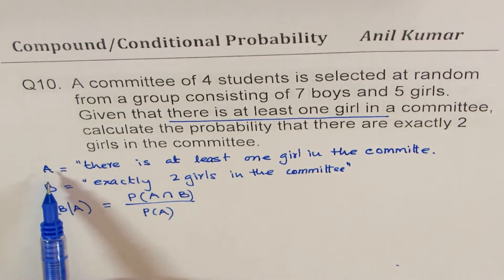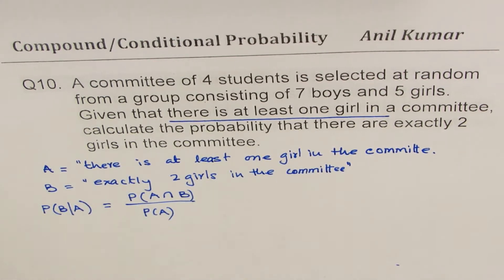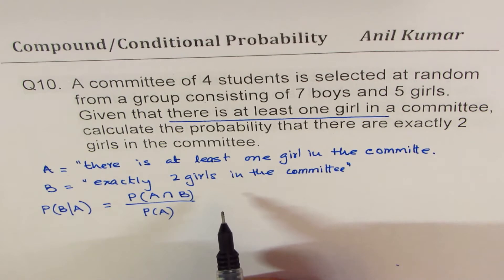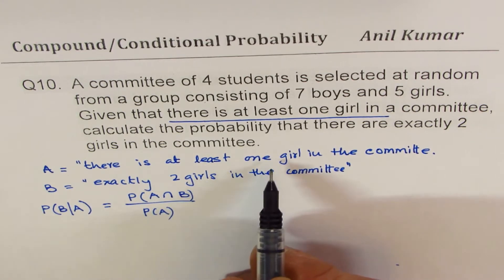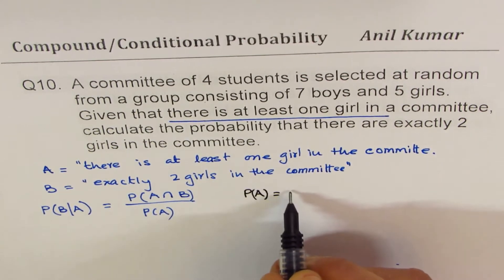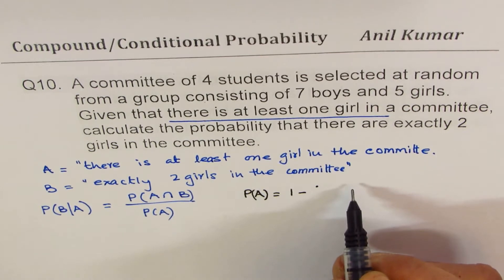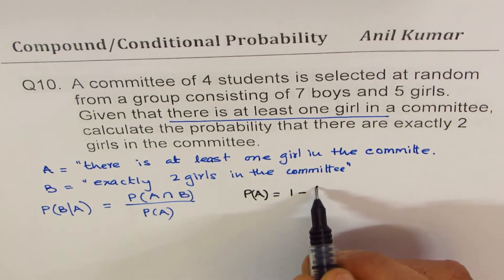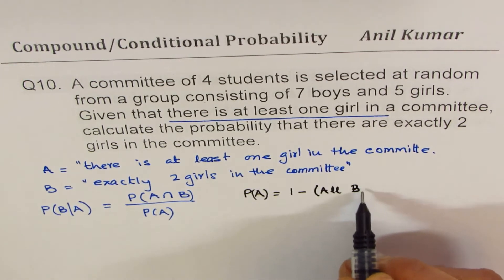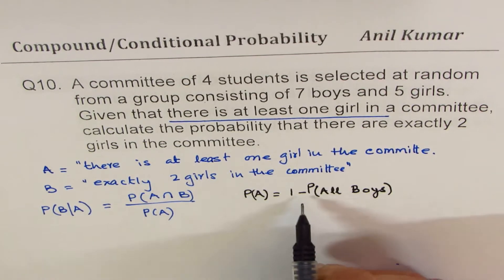Now let us find the probability of A — that is at least one girl. To find at least one girl, we use the complement: 1 minus the probability of no girls, which is the all-boys committee. So probability of A equals 1 minus probability of all boys.